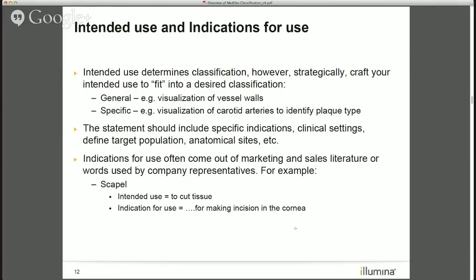The intended use statement should include specific elements: the indications, the clinical setting, target population, et cetera. FDA has guidance on how to craft your intended use on their website, and keeping it general is ideal for initial applications. Another thing easily overlooked is your marketing literature — FDA will consider the way you're marketing and talking about your device as indications. For example, if your label says a scalpel is intended to cut tissue, but you're out marketing it specifically for making incisions in the cornea, FDA will take that information into consideration, and you may end up in a higher-risk situation.